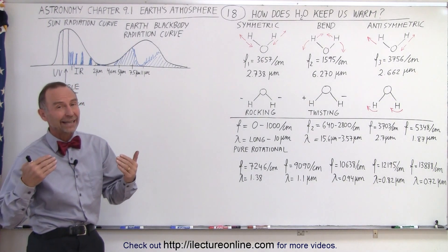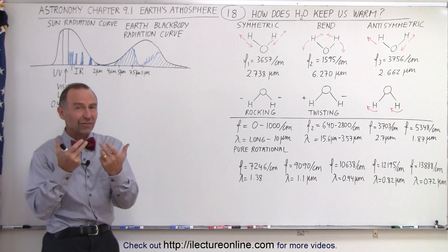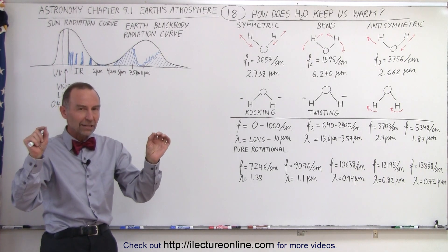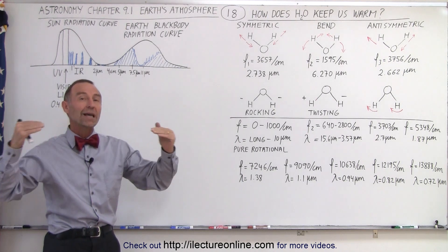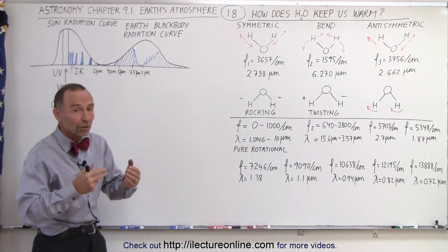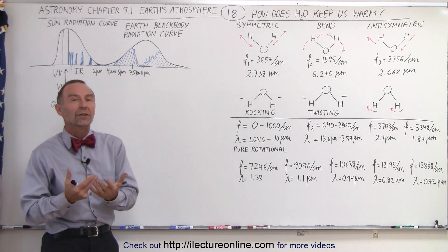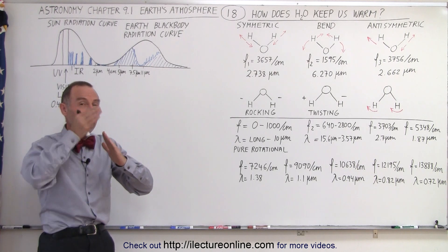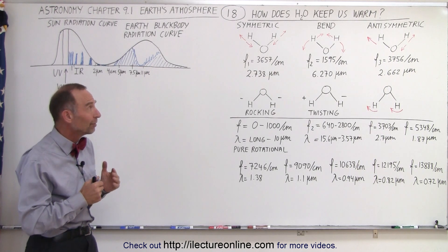Carbon dioxide is a linear molecule that is symmetric. It has a carbon in the middle, an oxygen on each side. And so one of the main vibrational modes does not absorb any infrared radiation because it doesn't create a dipole moment. But the water molecule is bent and therefore it has a very strong dipole moment.